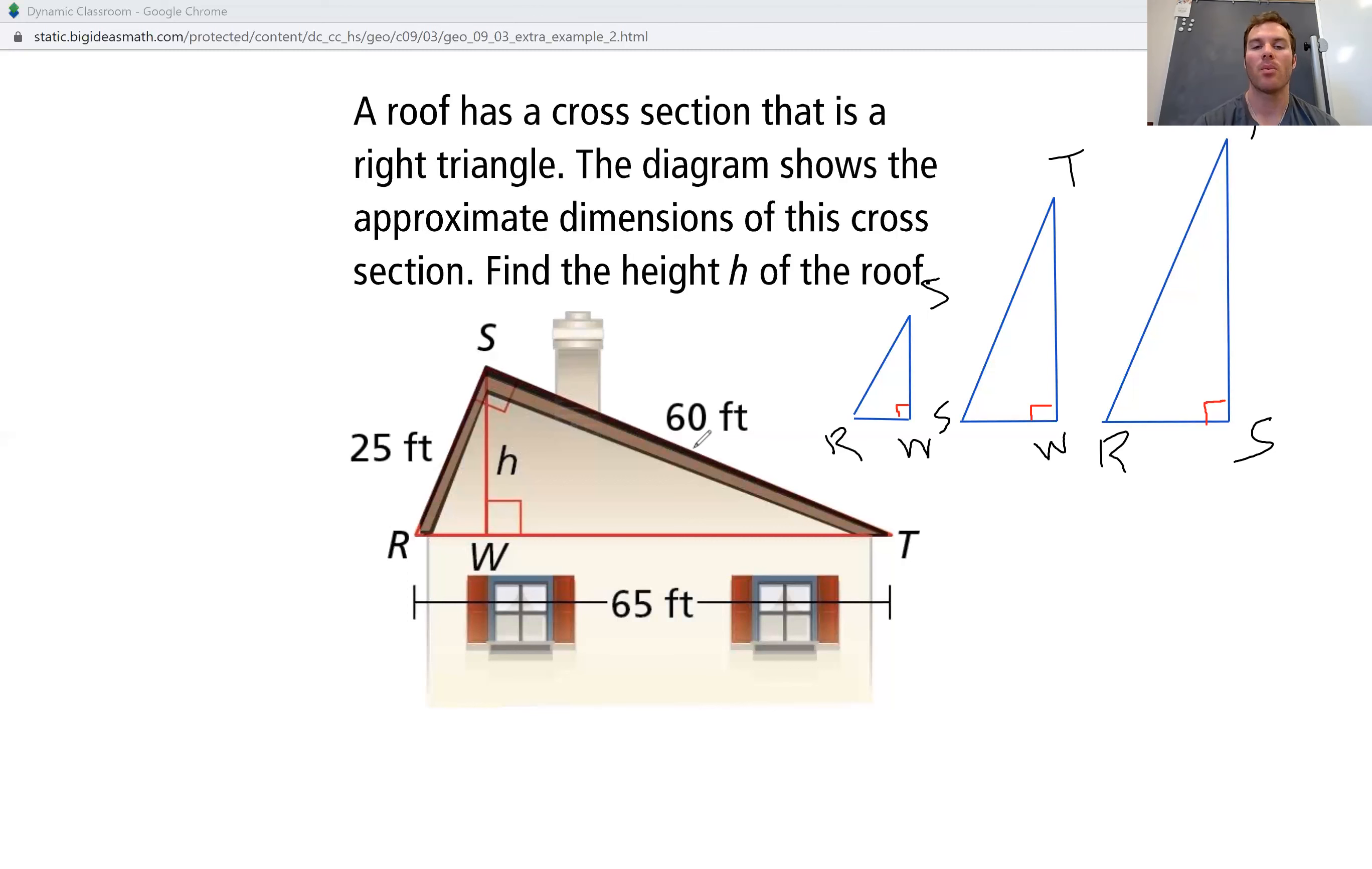Now we can mark what we know. We know that this length, RS, is 25 feet. And the hypotenuse of the large triangle, this whole long side right here is 65 feet. And we have the hypotenuse of the medium triangle, ST, and that's 60 degrees. I'm sorry. I should have done these in different colors. Not 60 degrees, 60 feet.